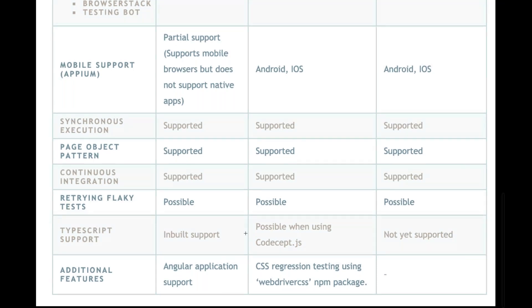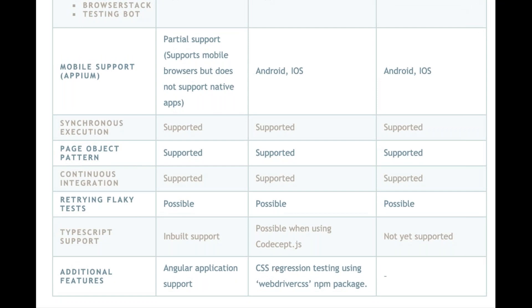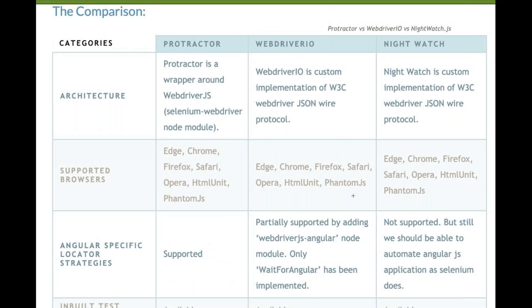Additional features: Protractor has Angular application support and CSS regression testing via the WebDriver CSS NPM package — you just need to install that package for CSS regression testing. There are no significant extra features listed for Nightwatch in this category. So those are the different comparisons between the three tools — you can have a look at them.